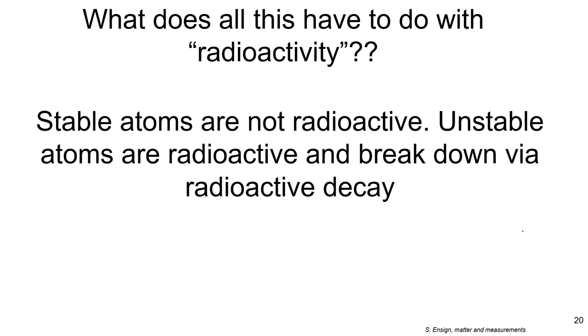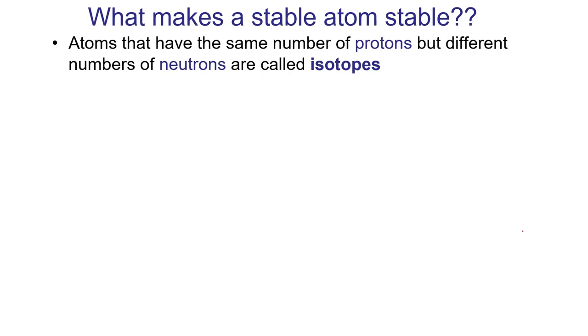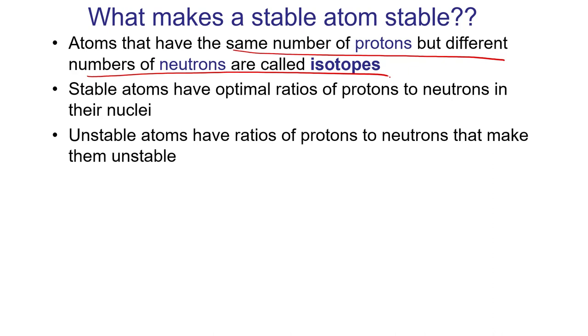Well, it turns out that stable atoms are not radioactive. But unstable atoms are radioactive, and they break down via radioactive decay. So what makes a stable atom stable? Atoms that have the same number of protons, but different numbers of neutrons we call isotopes. And here is what's important for radioactivity. Stable atoms have optimal numbers of protons and neutrons. You need some certain number of neutrons to glue the protons together to create a stable atom. But if you have an improper ratio of neutrons to protons, the atoms become unstable, and they break down releasing huge amounts of energy in nuclear reactions. That's what radioactivity is.